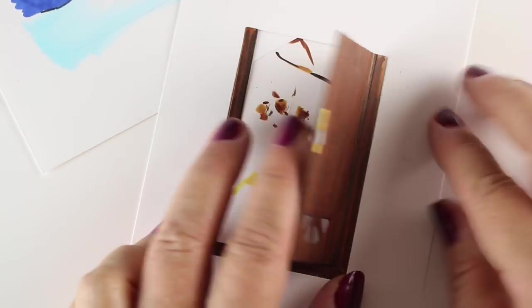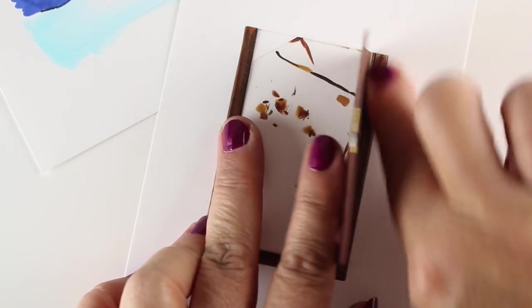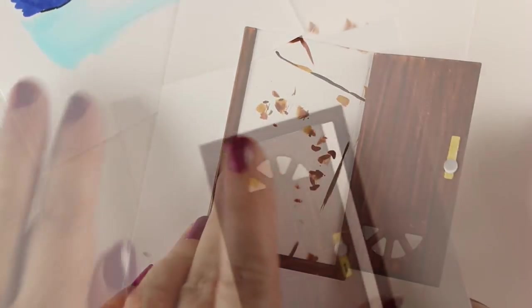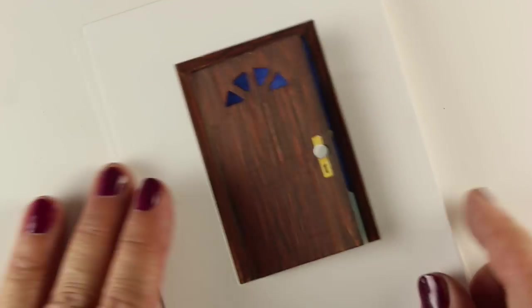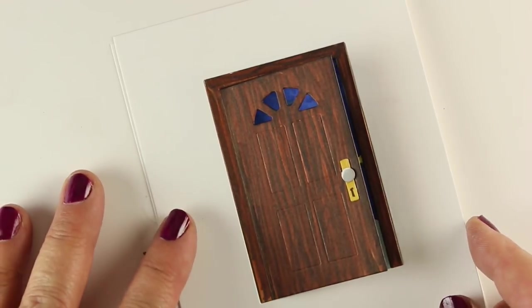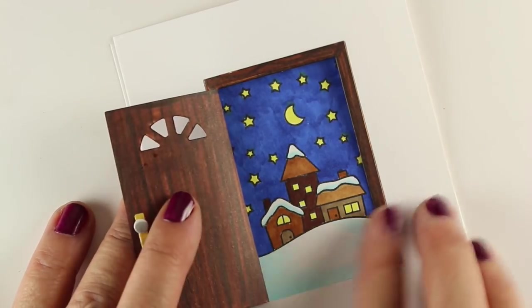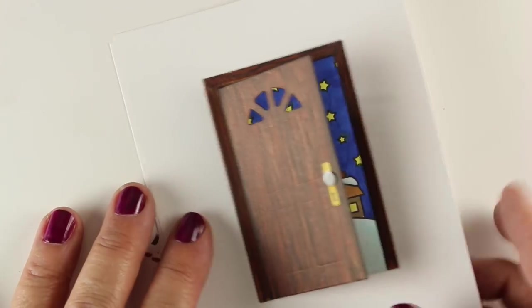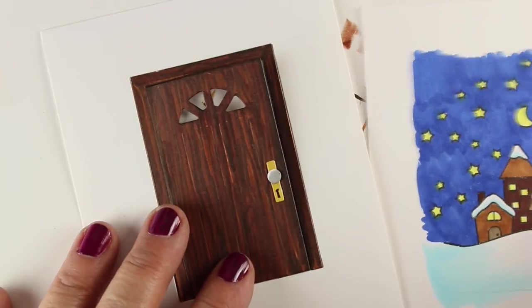So I used a block to just kind of bend that door because I forgot to get it, you know, kind of started so that it opens nicely. But now you can see when I put it over top of that panel I colored, how nicely that little scene is going to show through.